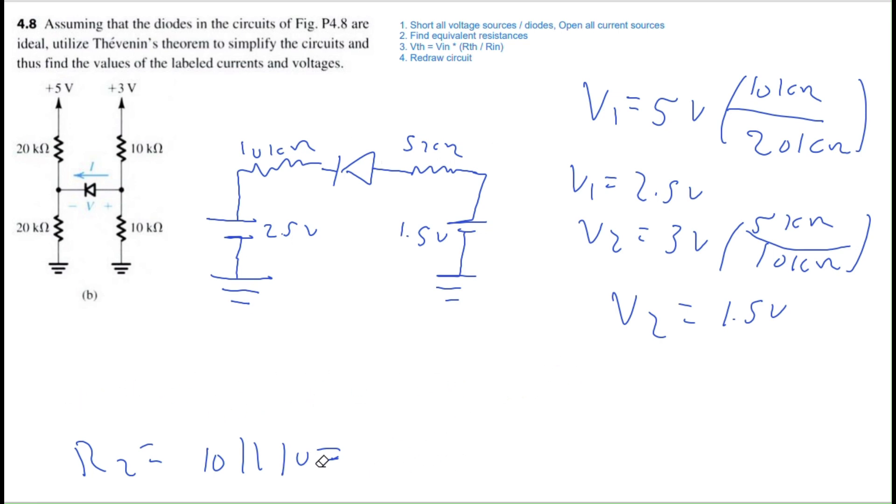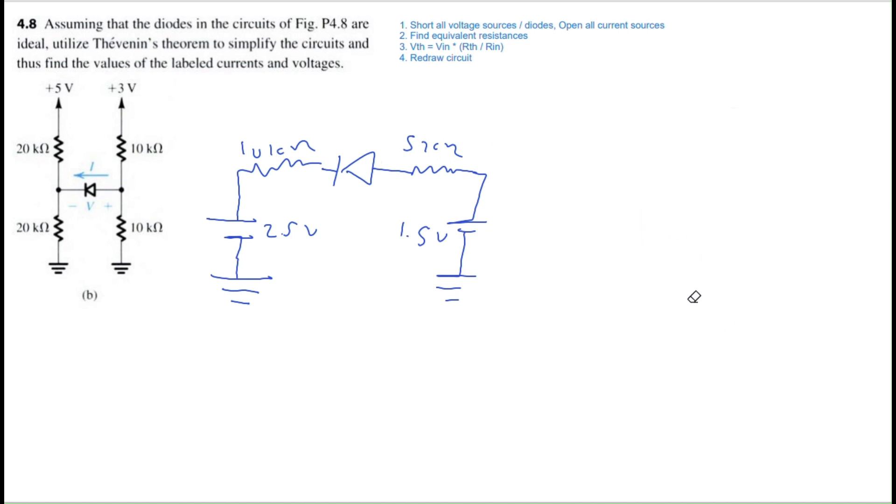So is the diode forward biased or reverse biased? Well, we see that from the anode, it's observing 1.5 volts. From the cathode, it's observing 2.5 volts. So we're going from low to high. Therefore, this diode is reverse biased. Because we have 1.5 and 2.5, this is going to behave like an open circuit. And because this diode is reverse biased, we can immediately state that the current is zero. We can immediately state that when the diode is reverse biased.